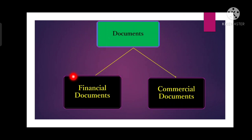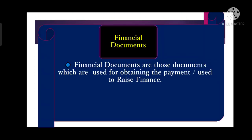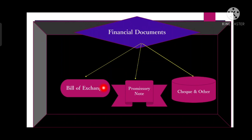Basically there are two types of documents: financial documents and commercial documents. Financial documents are those documents which are used to raise finance or which are used as a medium for obtaining payment. Basically financial documents are used as a medium for raising finance. Financial documents are of three types: bill of exchange, promissory notes, and checks. In this video we will only talk about the bill of exchange.